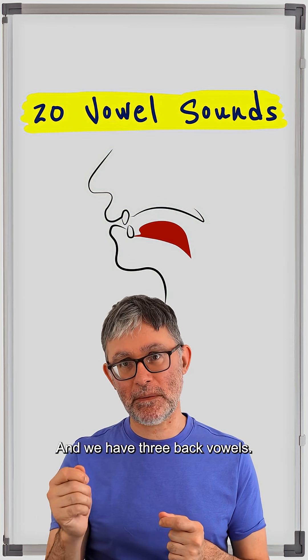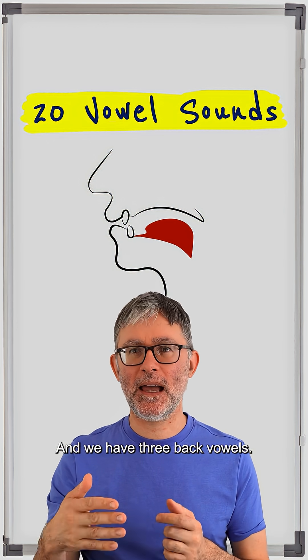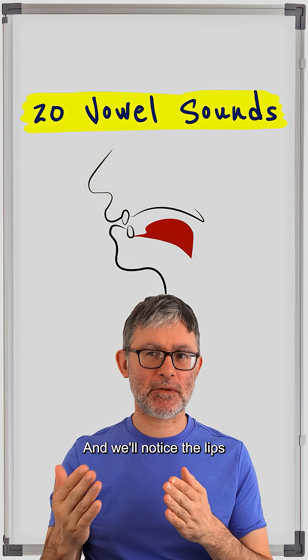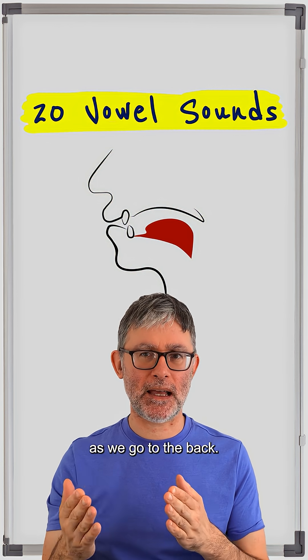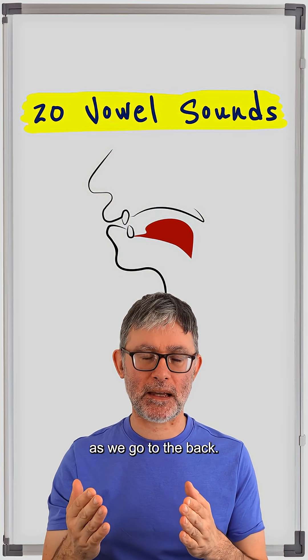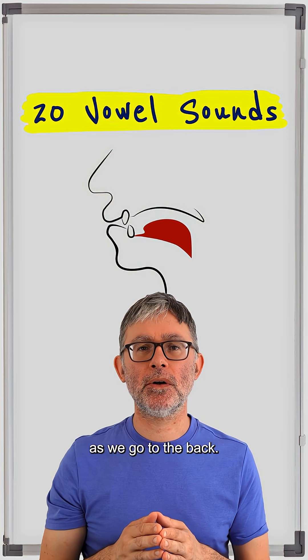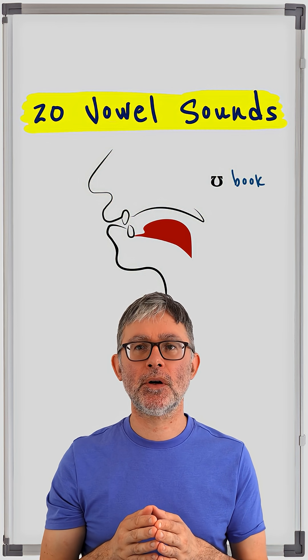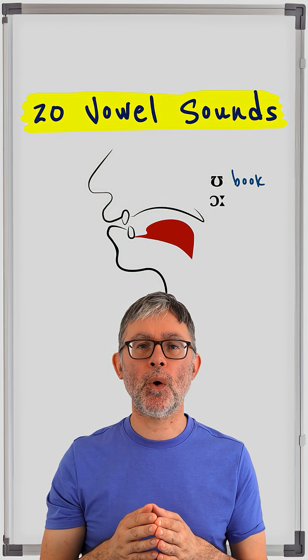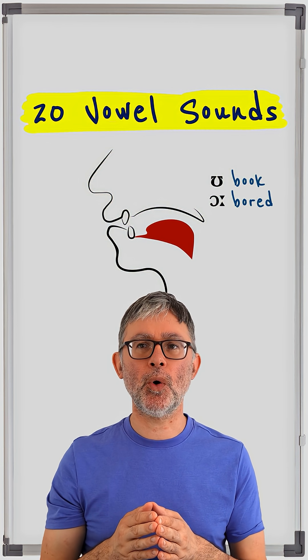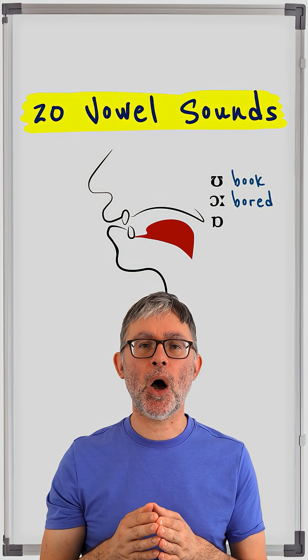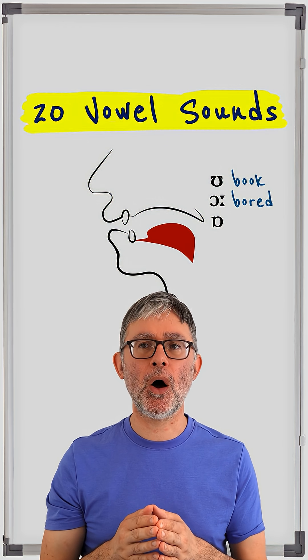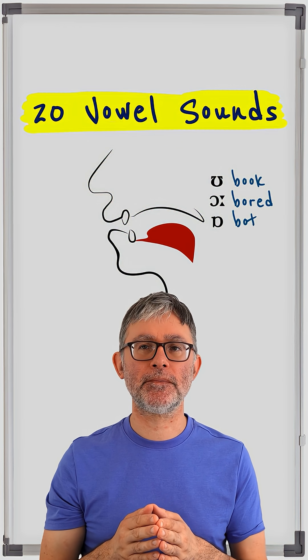And we have three back vowels, and we'll notice the lips rounding a bit as we go to the back: 'u' — book, 'or' — board, 'o' — bot.